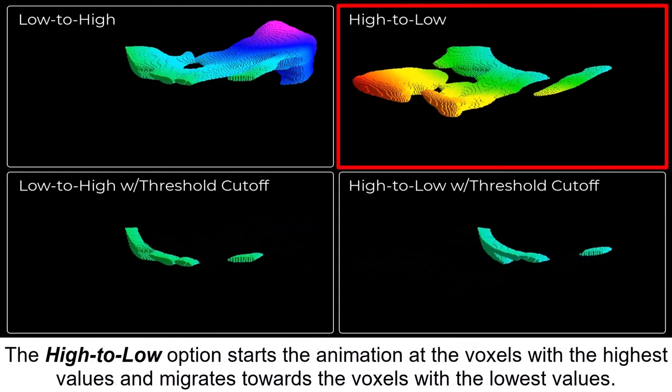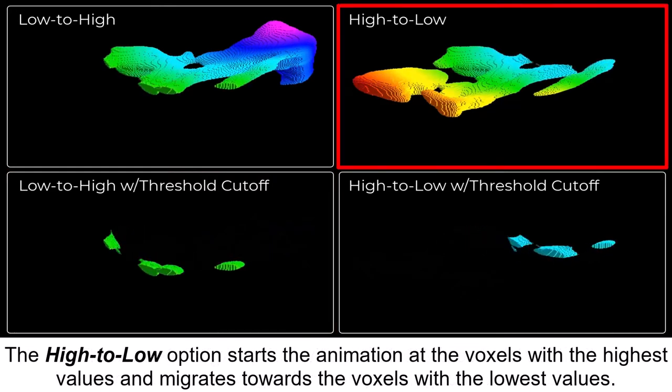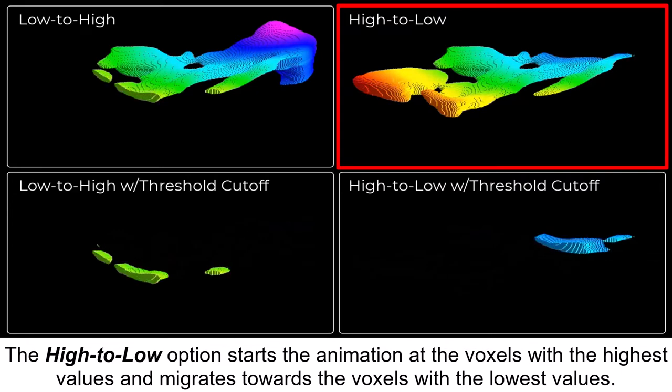The High-to-Low option starts the animation at the voxels with the highest values and migrates towards the voxels with the lowest values.